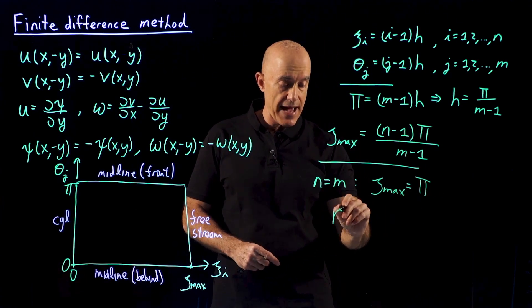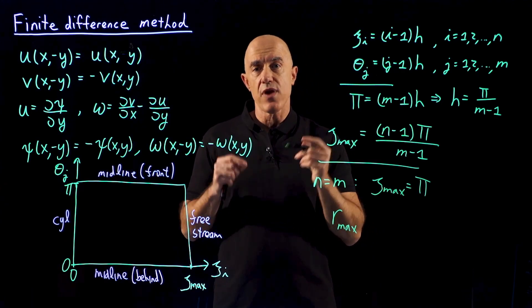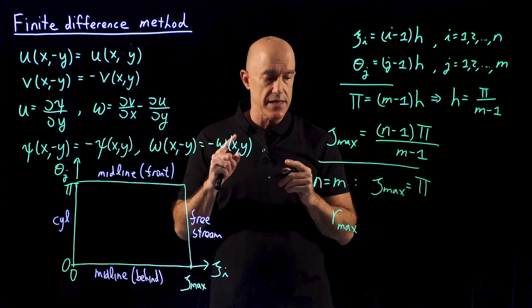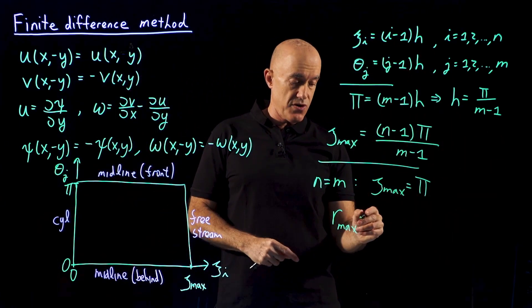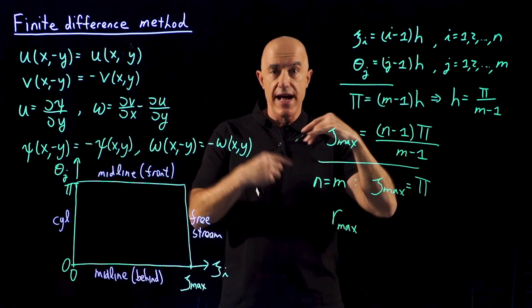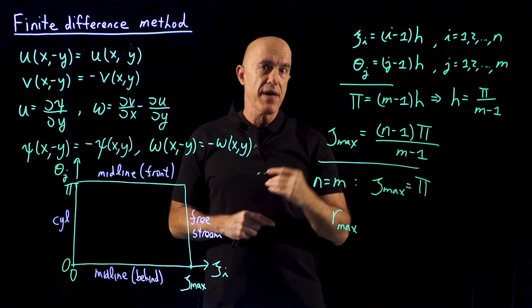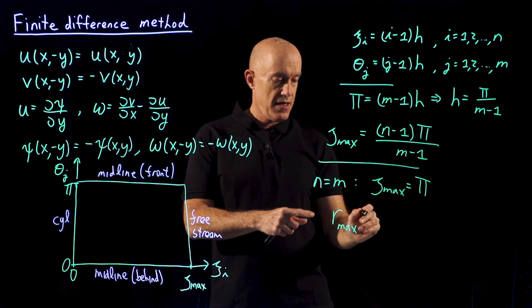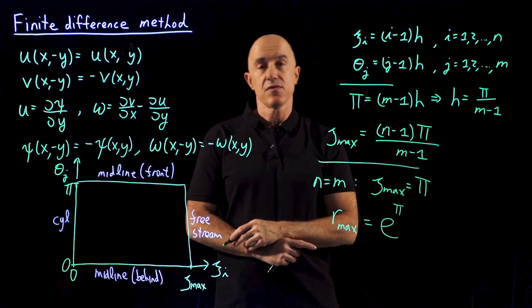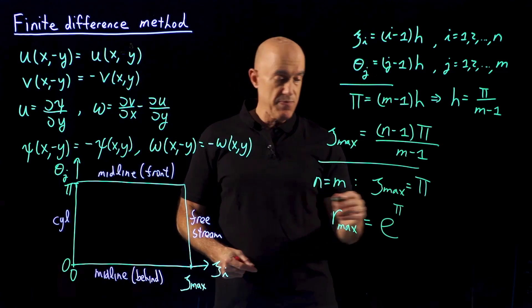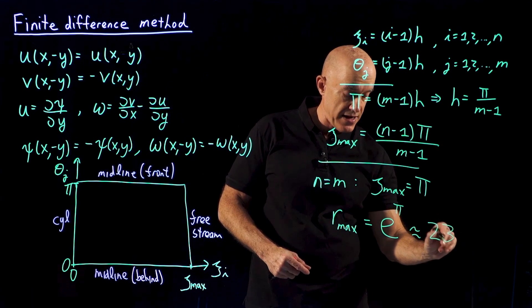Which means that our maximum radius, remembering that the radius of the cylinder is 1, so the maximum radius of our domain—our domain is going to be a big circle or actually a semicircle because we're only doing the top half of the domain—this is going to be e^(ξ_max), which is e^π. If you put that in your calculator, that works out to be a number around 23.